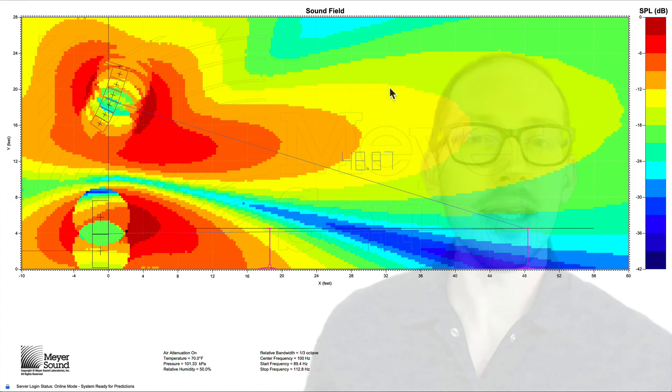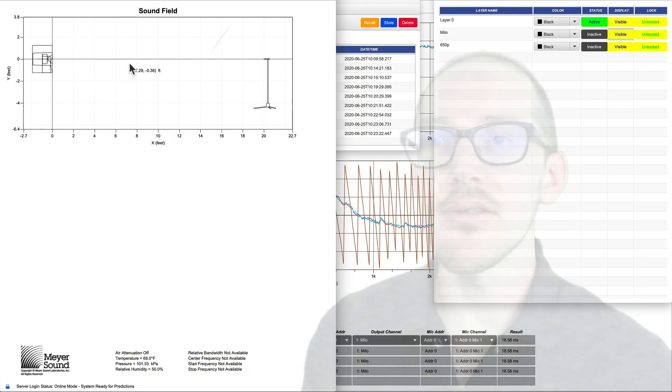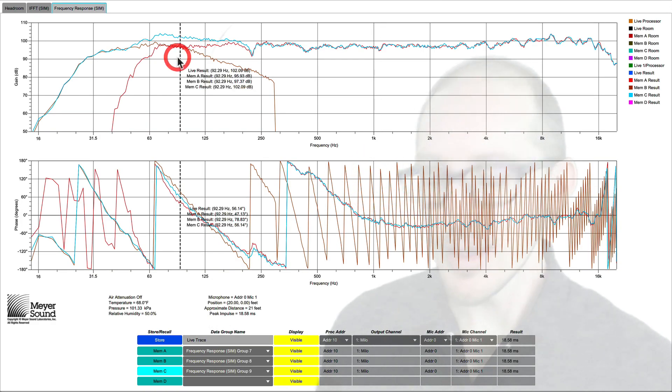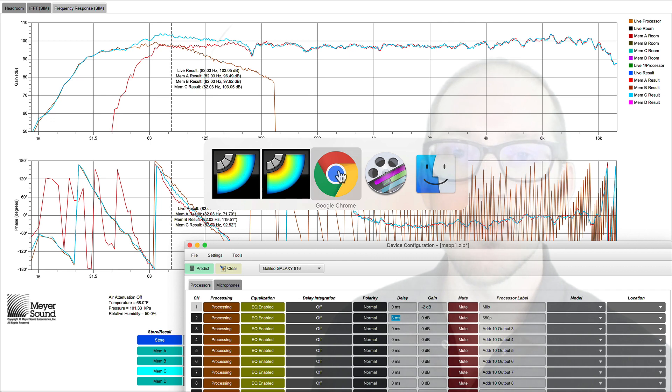But if we had taken the time to create the pre-alignment values before we did this, we could have avoided this. That's what I want to show you right now. Over here, I have another design open that gives me the opportunity to compare one of those Milo with one of those 650p. I created an alignment that I said is fine, is aligned, and I have three milliseconds of delay in the sub. So that's my pre-alignment value for this pair.